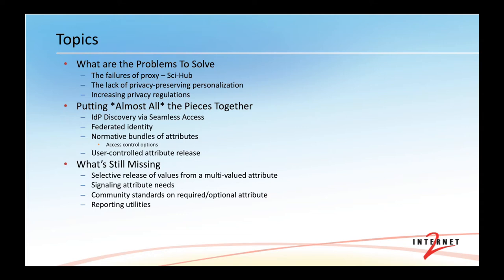The unfortunate example for that is group memberships. All of your group memberships are contained in a single attribute that is multivalued, and we only want to pass selected group memberships to relying parties depending upon the relying party. There's a similar set of needs that need to be addressed around signaling what attributes various parts of an entity might need, again with the intention of preserving privacy, and some community standards on how we choose the perimeter between what are required and optional attributes.